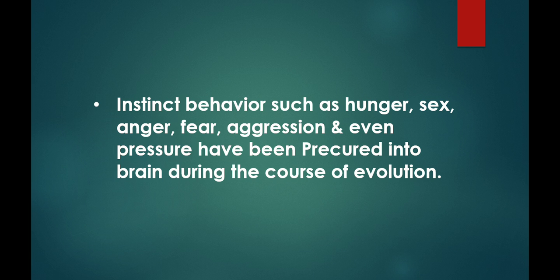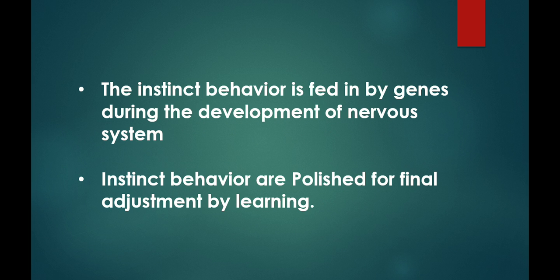Instinct behaviors such as hunger, sex, anger, fear, and aggression have been encoded in the brain during the course of evolution. The instinct behavior is fed in by genes during the development of the nervous system.